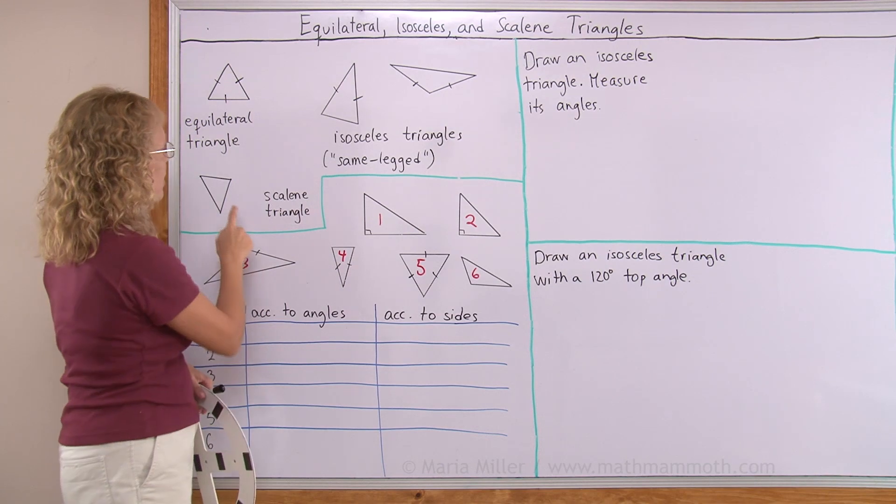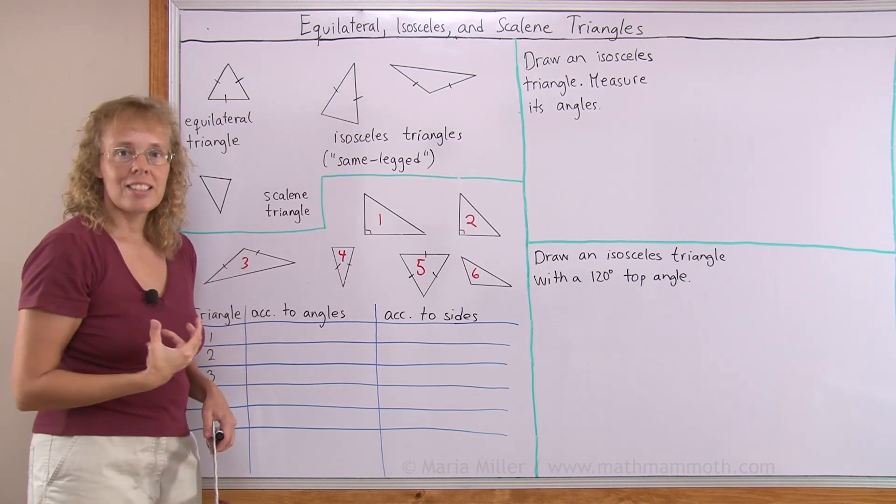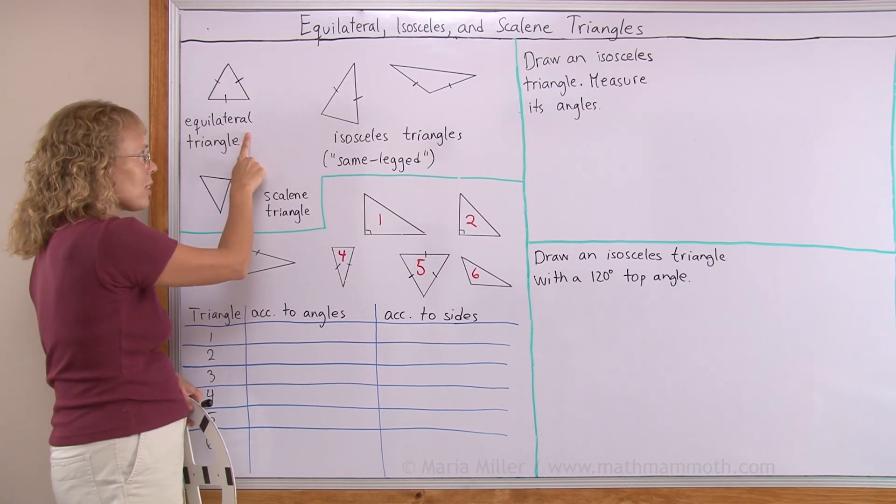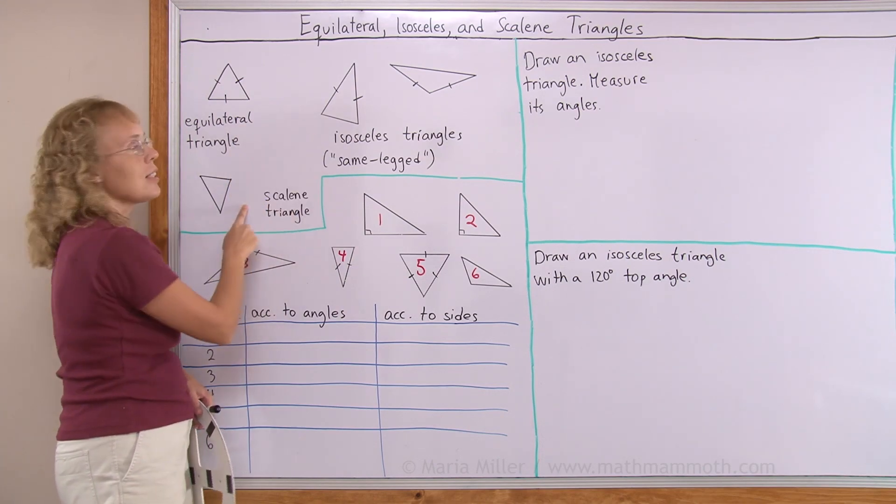Scalene triangle is where all three sides are of different lengths. So if a triangle is not equilateral and not isosceles, it is scalene.